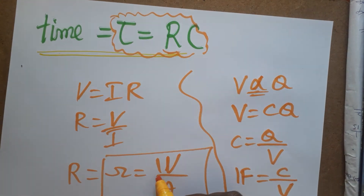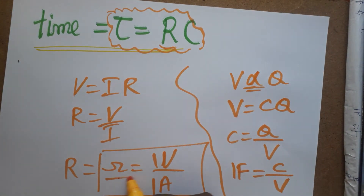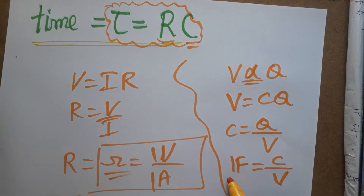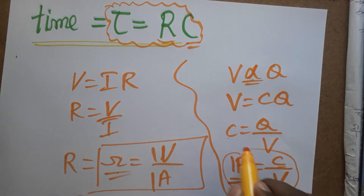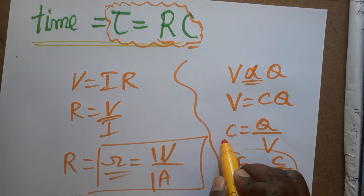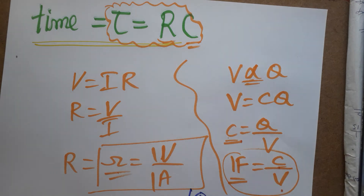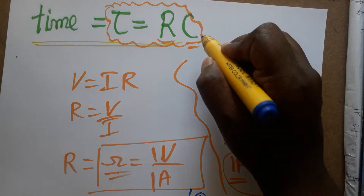So we have: R in Ohms equals Volt per Ampere, and C (capacitance) in Farads equals Coulombs per Volt. Note that this 'C' represents the formula for capacitance, and 'Q' represents charge in Coulombs. Now I'm going to substitute both values into the equation.